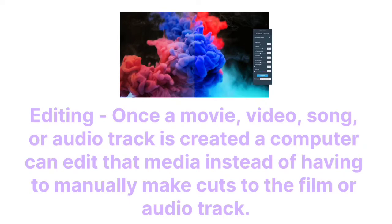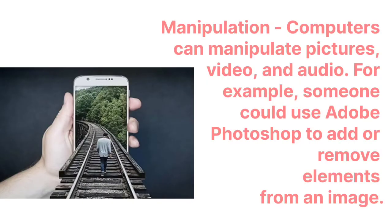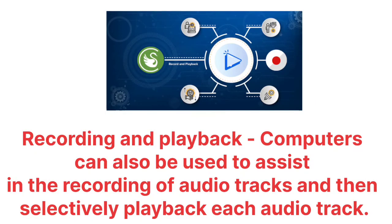Editing: once a movie, video, song, or audio track has been created, a computer can edit that media, instead of having to make manual cuts to the film or audio track. Manipulation: computers can manipulate pictures, video, and audio — for example, someone could use Adobe Photoshop to add or remove elements from an image.